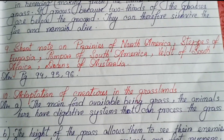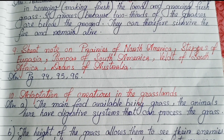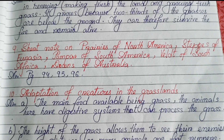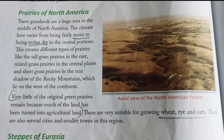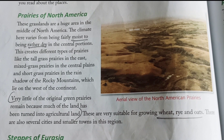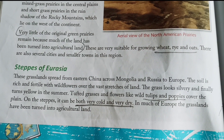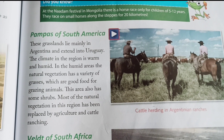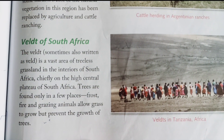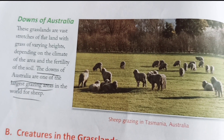Next, short notes on the grasslands. Prairies of North America, Steppes of Eurasia, Pampas of South America, Veld of South Africa, and Downs of Australia. You can find all these short notes from the book; please take screenshots of each as they appear on screen.